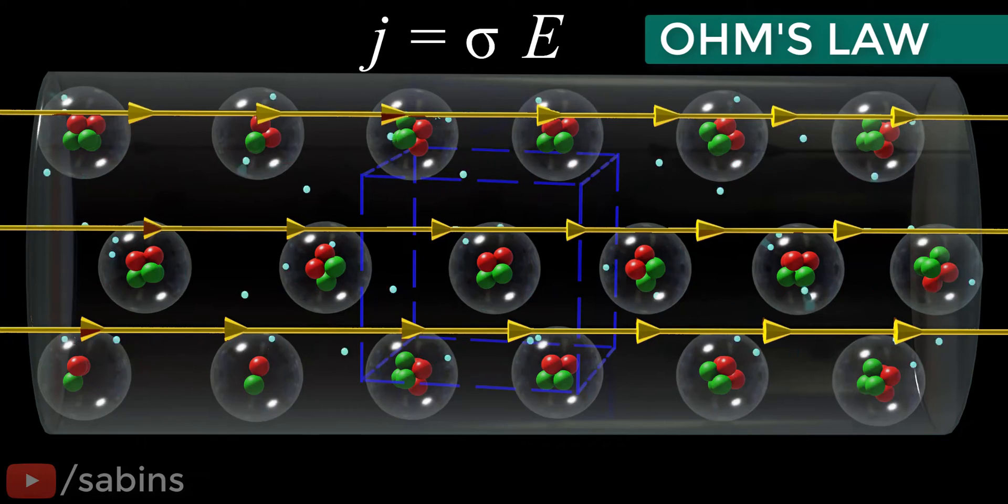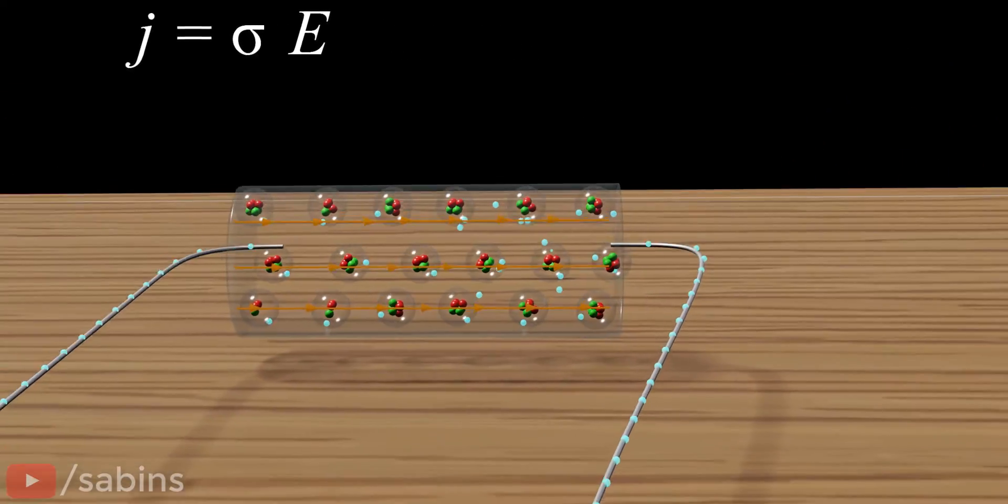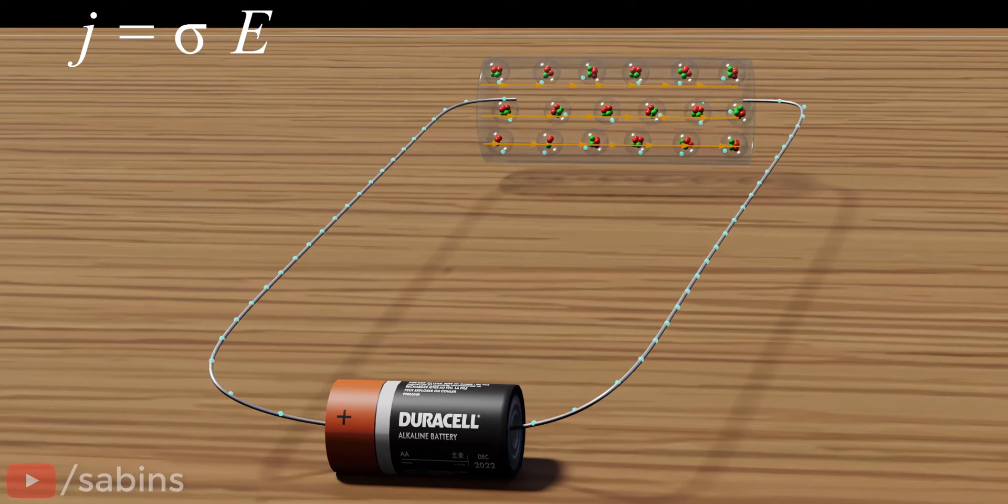However, let's present Ohm's law in more user-friendly terms. Assume this electric field is generated by a battery. According to the definition of electric potential, we can deduce the electric field value as shown.